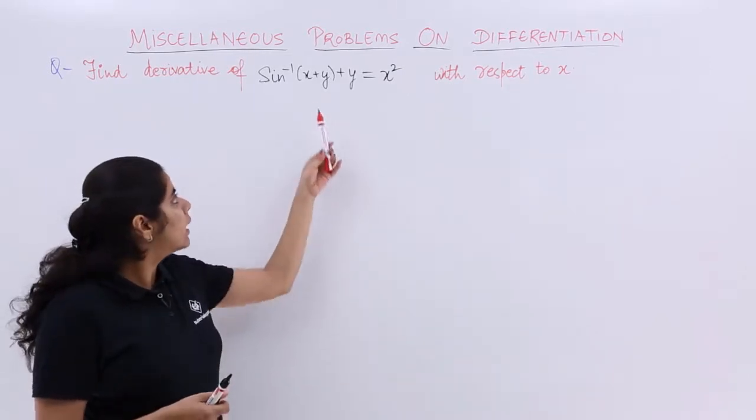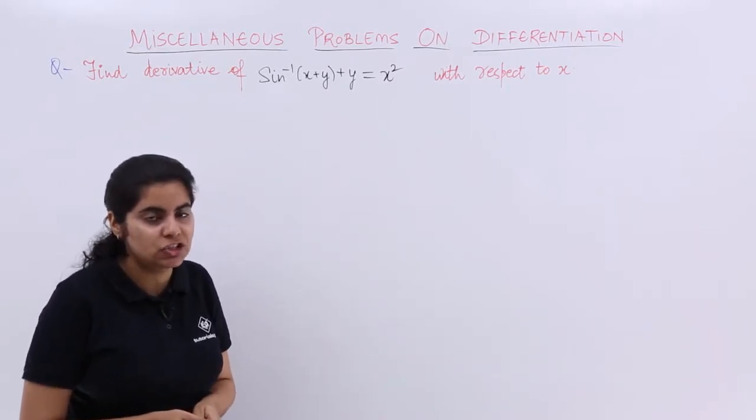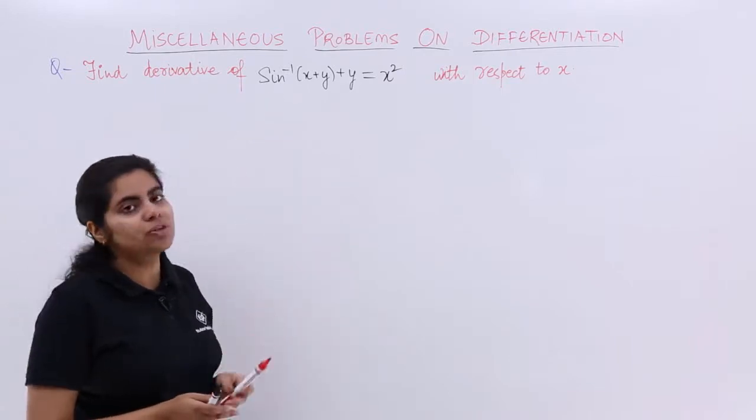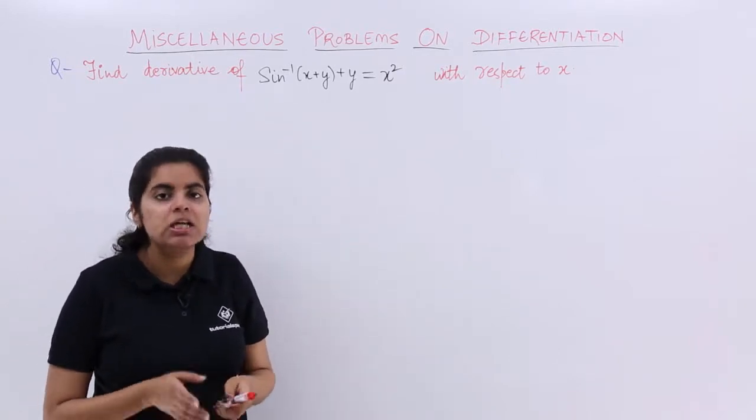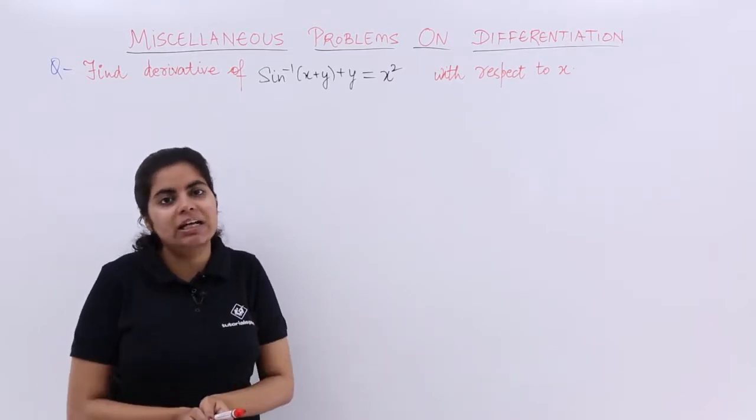As you see, again x and y cannot be separated. So it again falls in the category of implicit differentiation. Also you have inverse trigonometric function sin inverse. So you need to know the formulas of whatever we have studied till now.